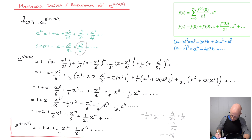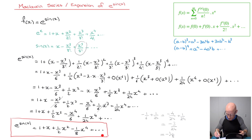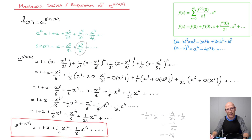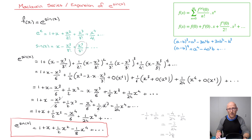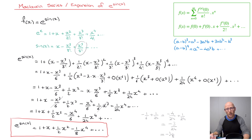And that's the Maclaurin series for e^(sin x). We'd get the same result using the well-known formula, but I guarantee it would be a lot more time consuming and there'd be a lot more room for error. Knowing how to find expansions by substituting one expansion inside another is very, very useful. I really hope that helped — please like this video, drop a comment below, and subscribe to the channel. That's it for this tutorial.